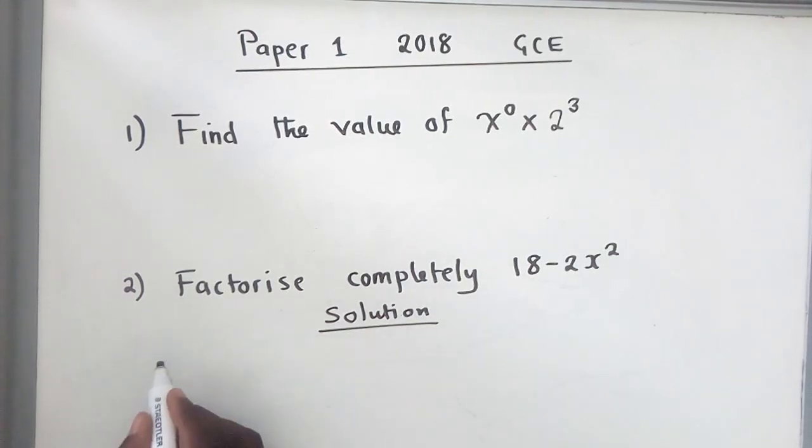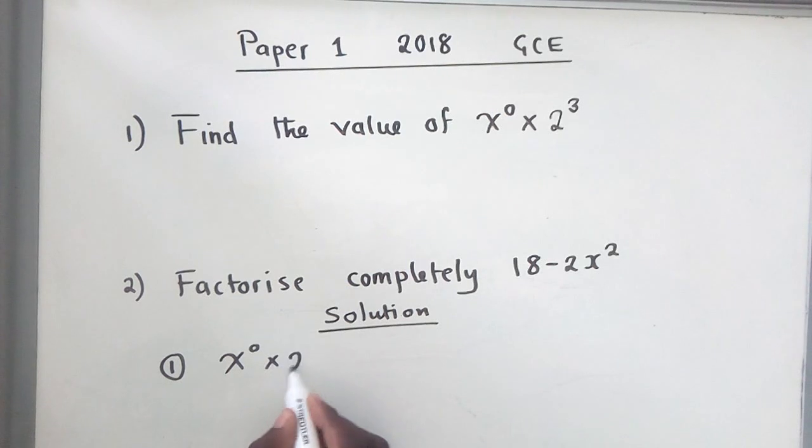For question one, you copy the expression as given. Then check the powers. Anything to the power zero is one, and two must multiply by itself three times because of the power three.